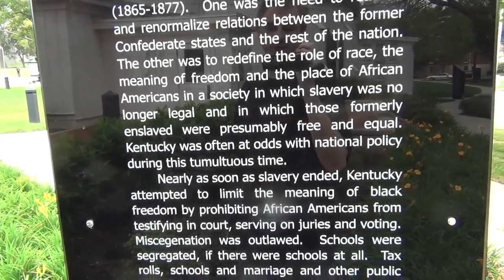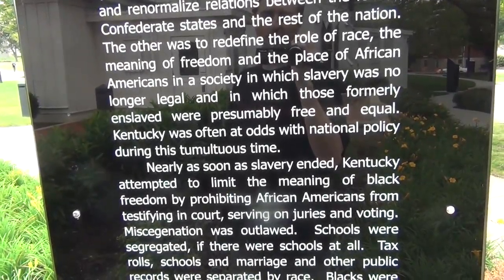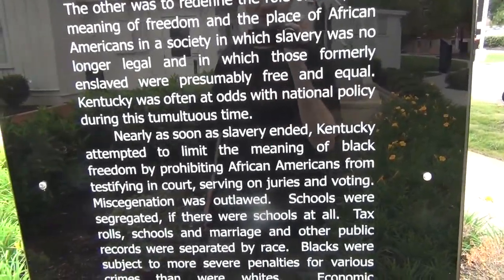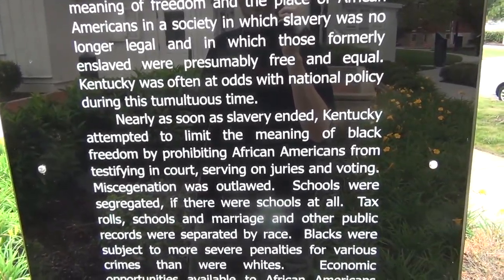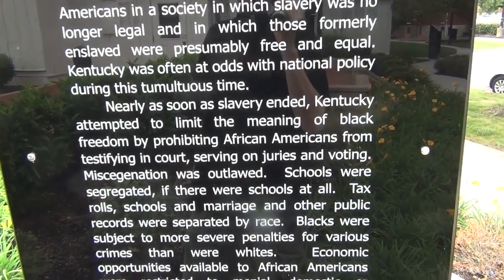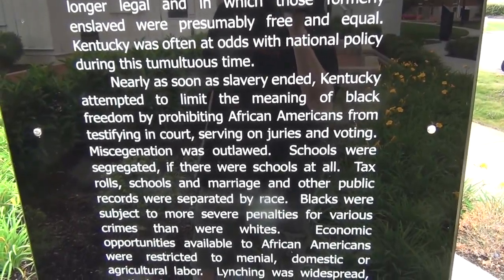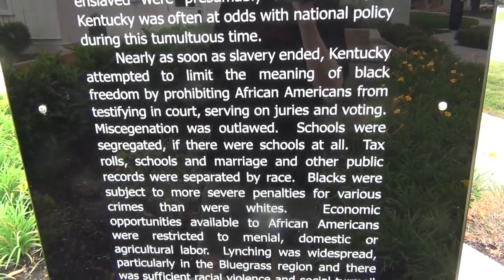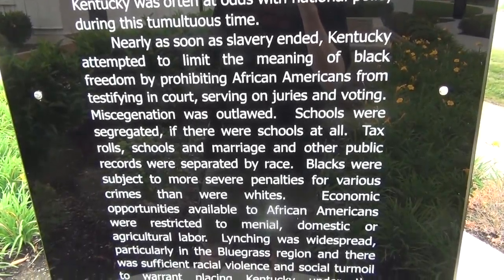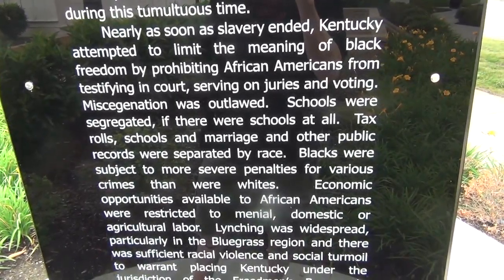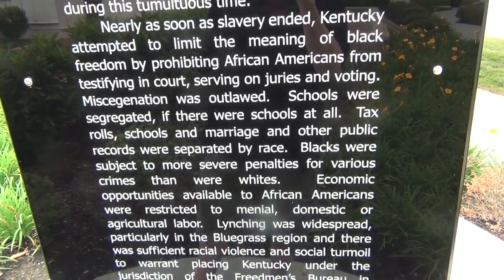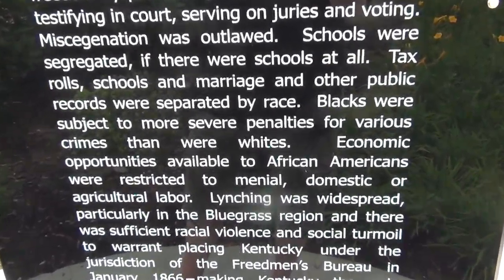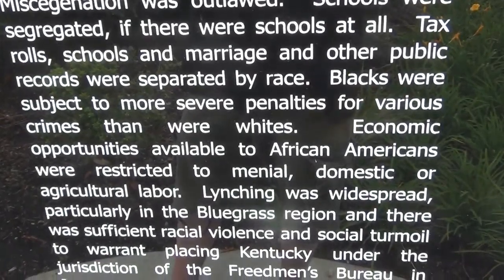Kentucky was often at odds with national policy during this tumultuous time. Nearly as soon as slavery ended, Kentucky attempted to limit the meaning of black freedom by prohibiting African Americans from testifying in court, serving on juries, and voting. Miscegenation was outlawed. Schools were segregated if there were schools at all. Tax rolls, schools, marriage, and other public records were separated by race. Blacks were subject to more severe penalties for various crimes than were whites.